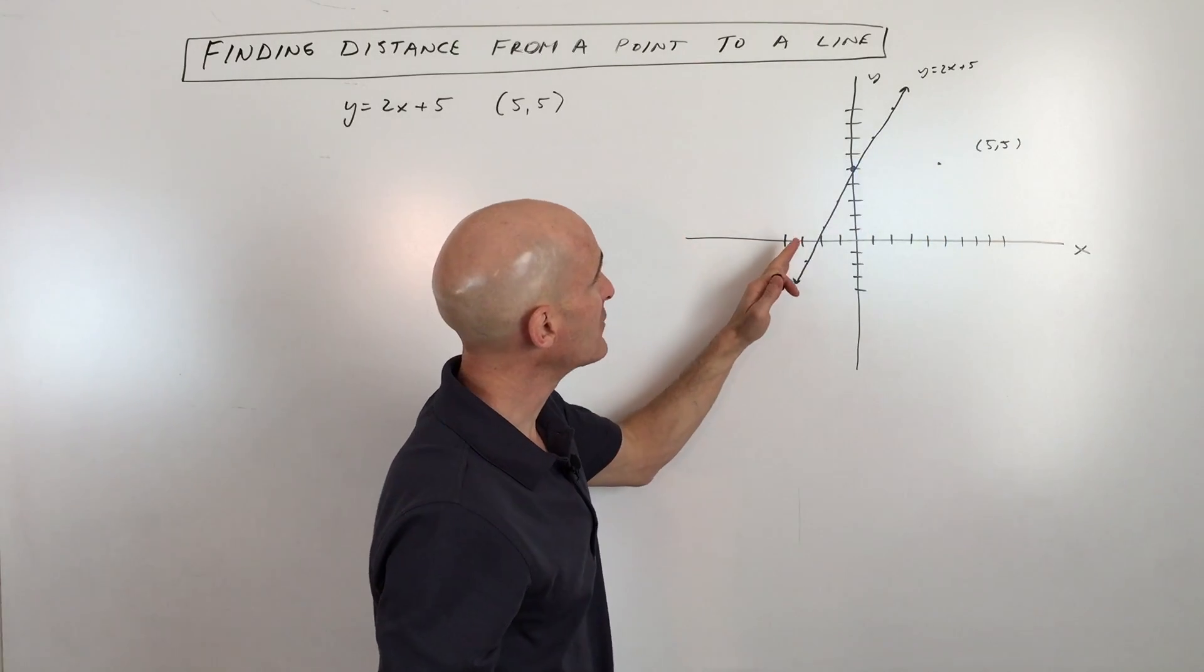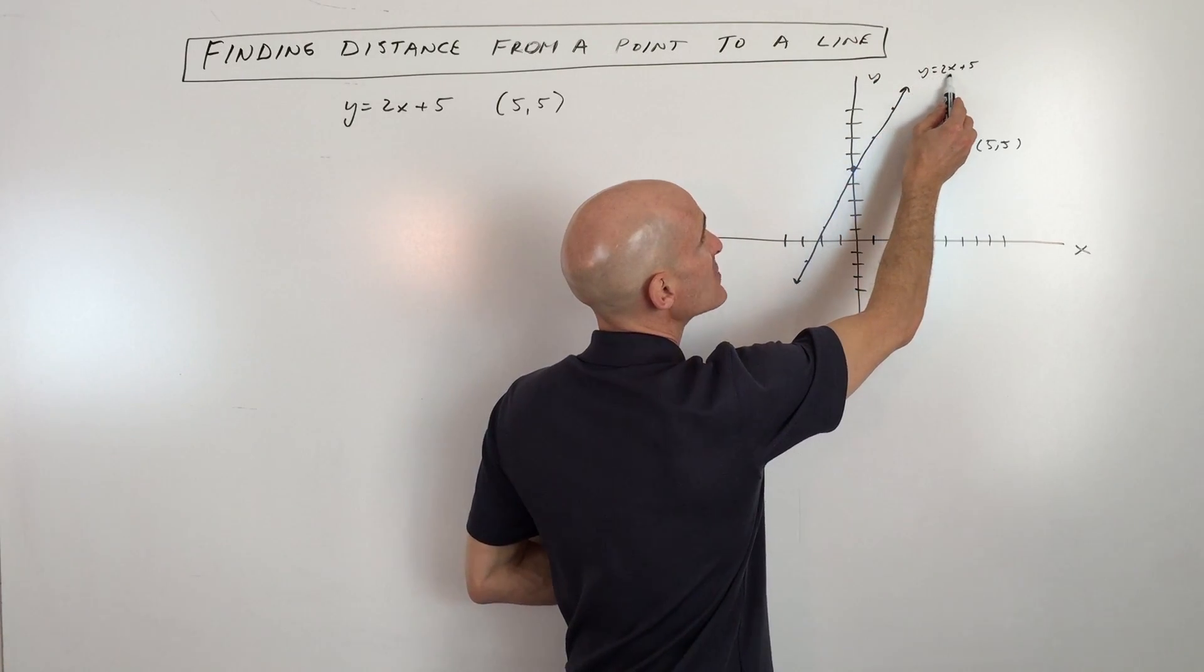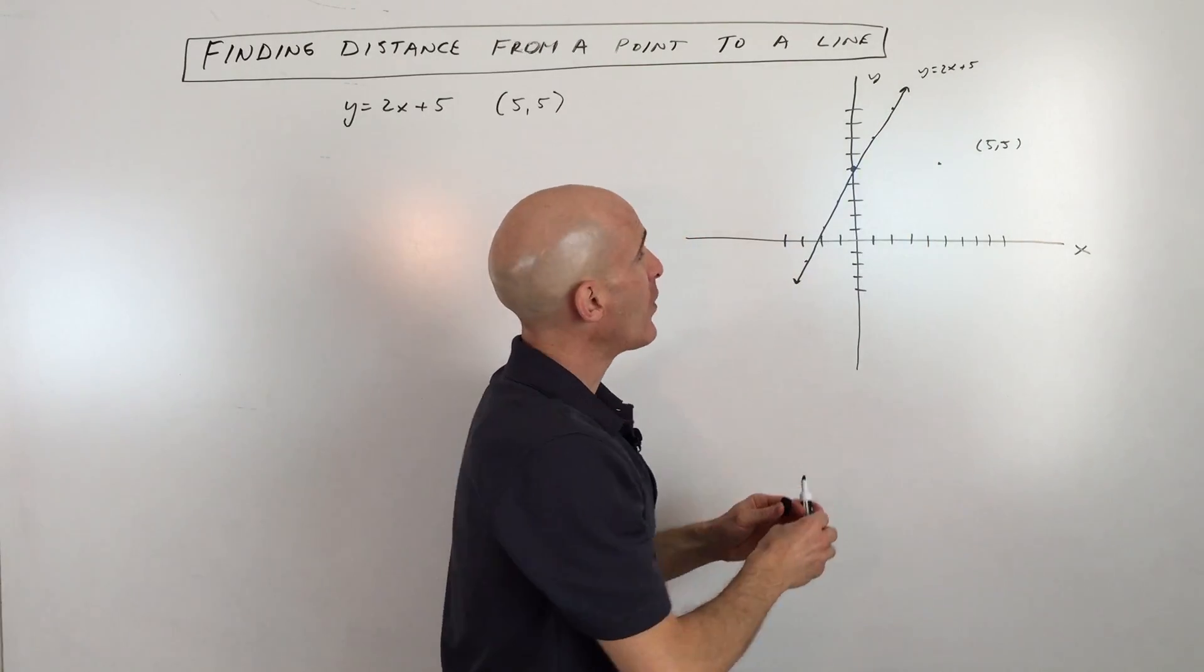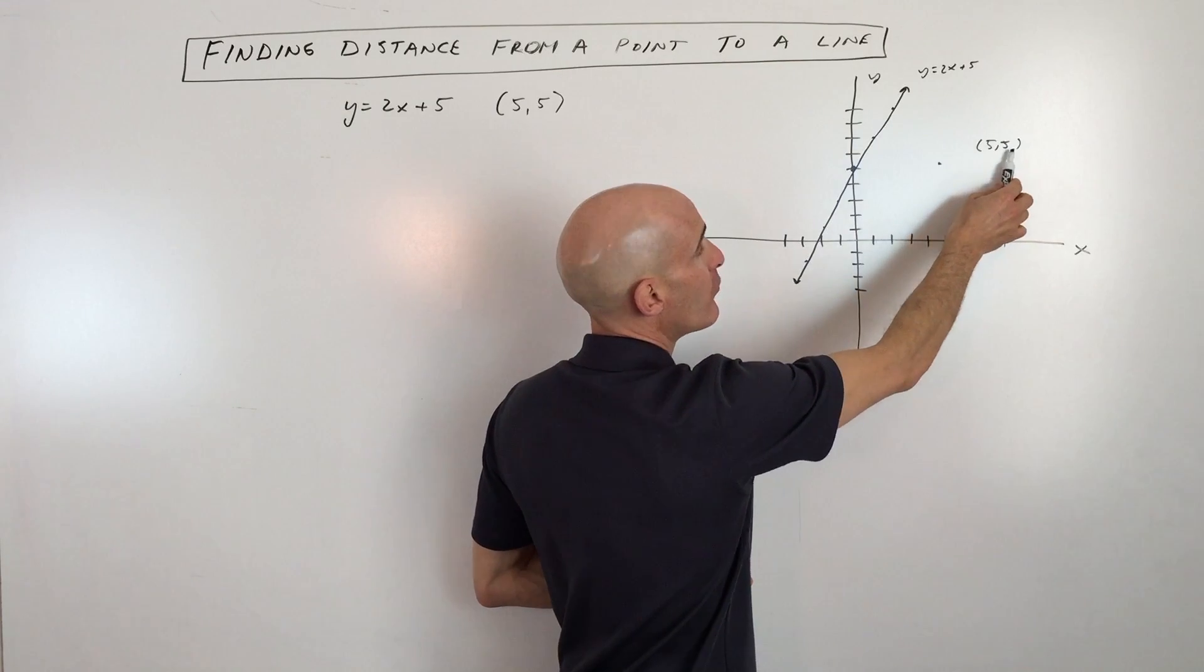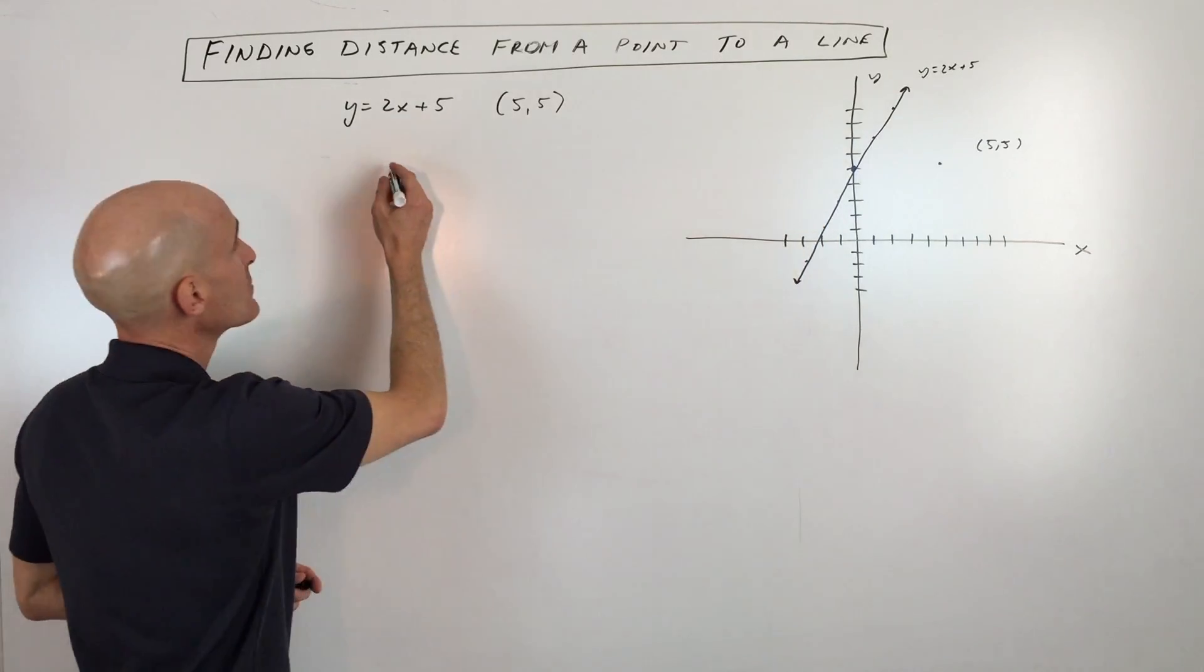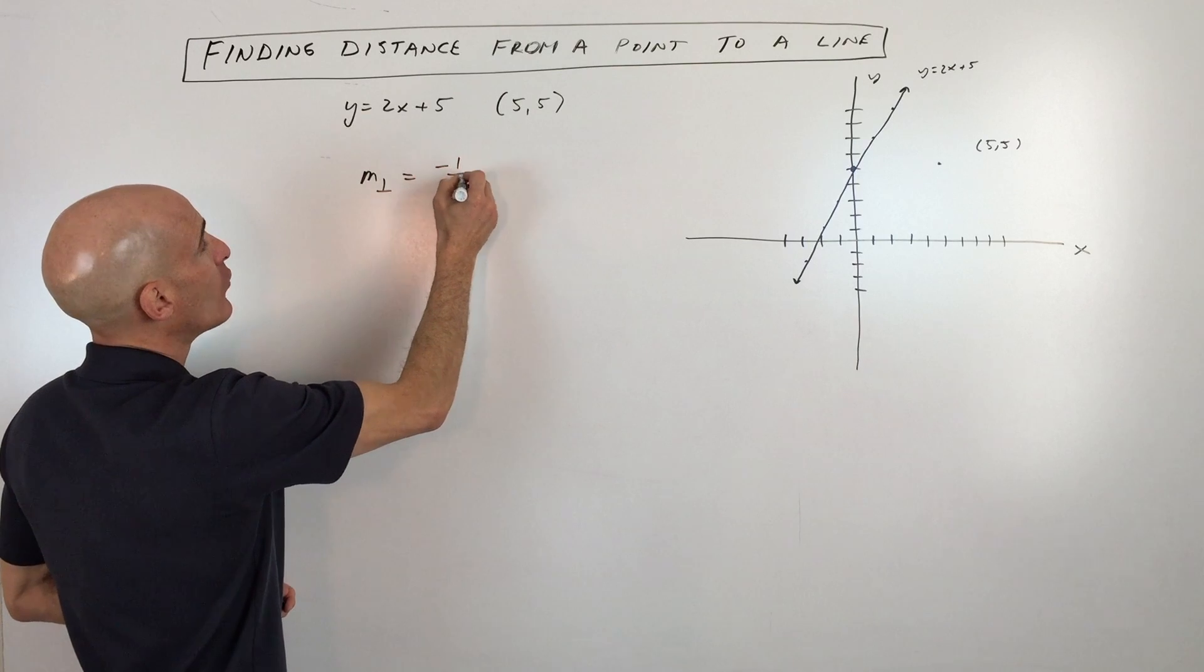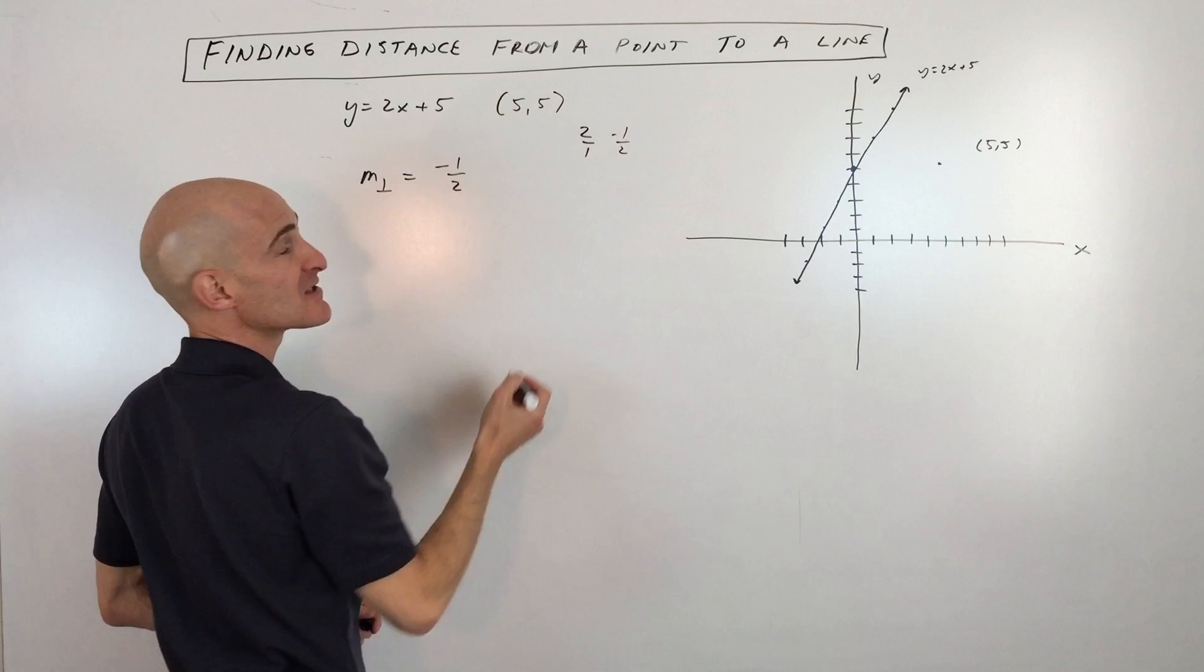Now the first thing you want to do is find the slope of this line, which you can see here because this is in the y equals mx plus b form of the line, that 2 is our slope. Now if we want to find the slope of the line that's going to be perpendicular to this line through the point (5,5), we're going to need to use the opposite reciprocal of this slope. So the opposite reciprocal of 2 is negative 1/2. So I just took that 2 over 1 and I flipped it over and then I made it the opposite sign.